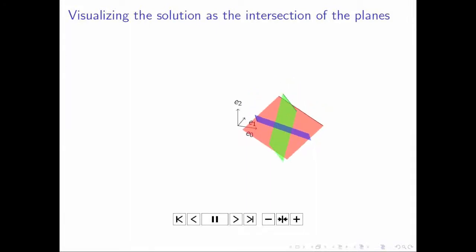What I did here was I overlaid the three planes. Because remember, the point that solves all three equations simultaneously is the point where all three of these planes intersect.